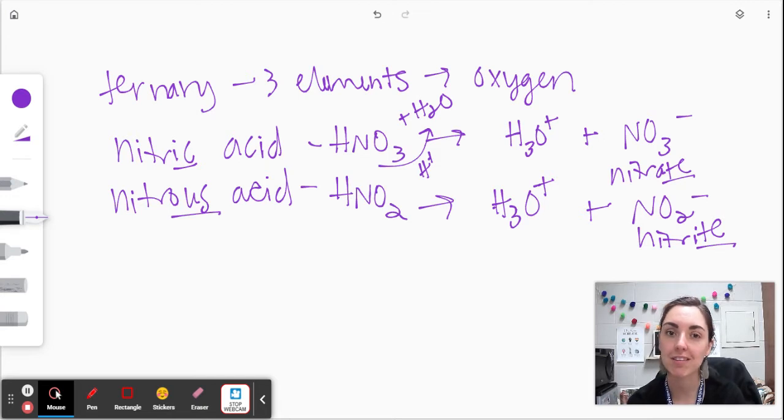So notice how an ate ion gives us an ic acid and an ite ion gives us an ous acid. So remember this is the terrible chemistry disease, ate-ic-itis. An ate ion gives us an ic acid and an ite ion gives us an ous acid.